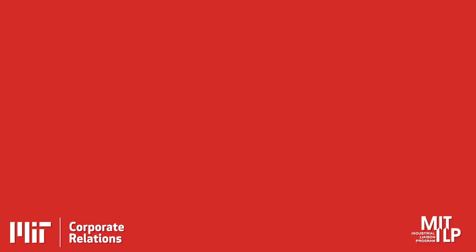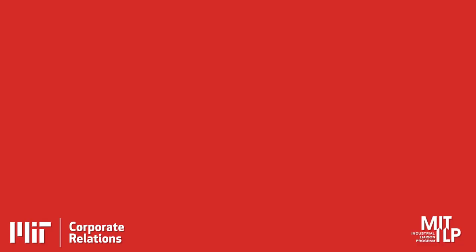The hope is that by studying this rare form of autism spectrum disorder, you can understand how it happens in the broader population, which is sporadic ASD. SHANK-3 is one of the genes where mutation will lead to very severe ASD — it's called Phelan-McDermid syndrome, a syndromic ASD.